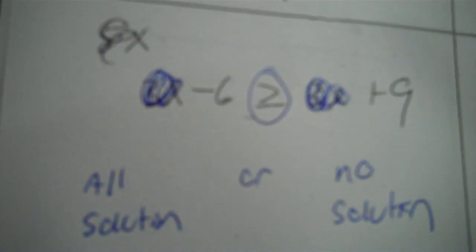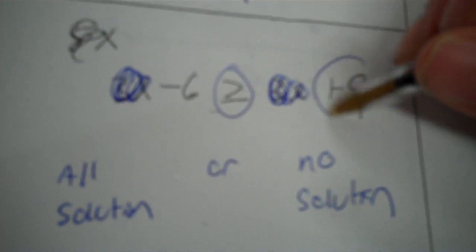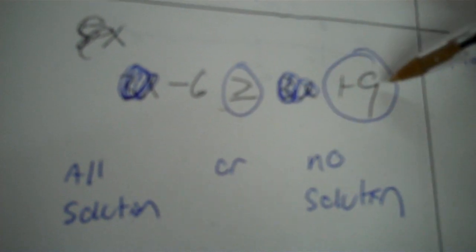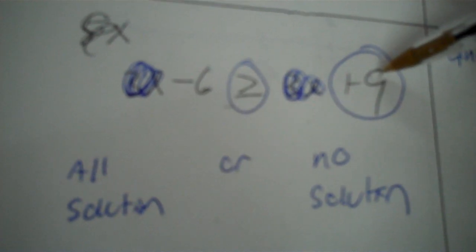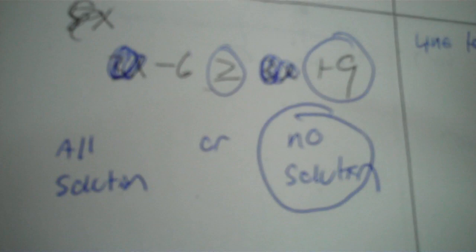The next problem has like terms, so keep the sign when combining. But if the x terms are equal on both sides, cross them out — then you check the remaining constants. Since this is an inequality, look at the remaining numbers: negative 6 and positive 9. Positive 9 is the bigger number — is the sign eating it? No, so it's eating the wrong number. That means this is no solution. If the sign were eating the correct number, it would be all solutions.